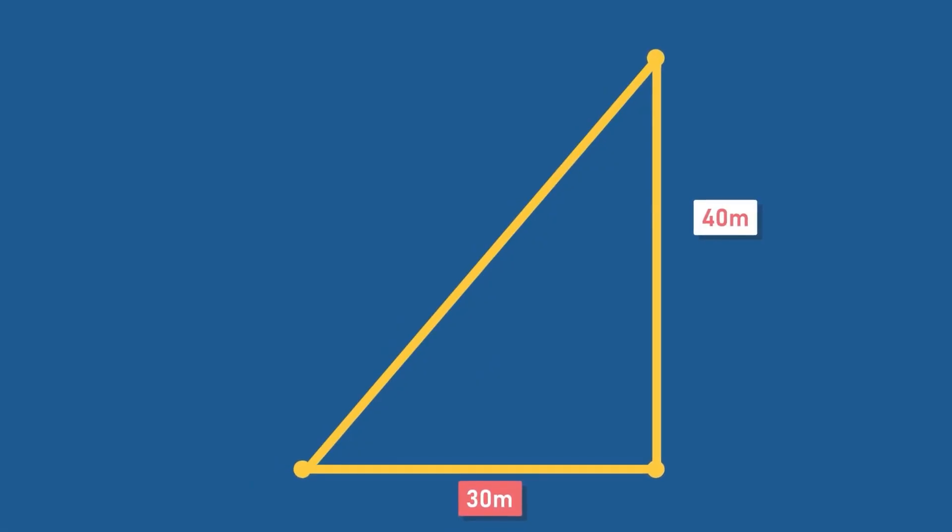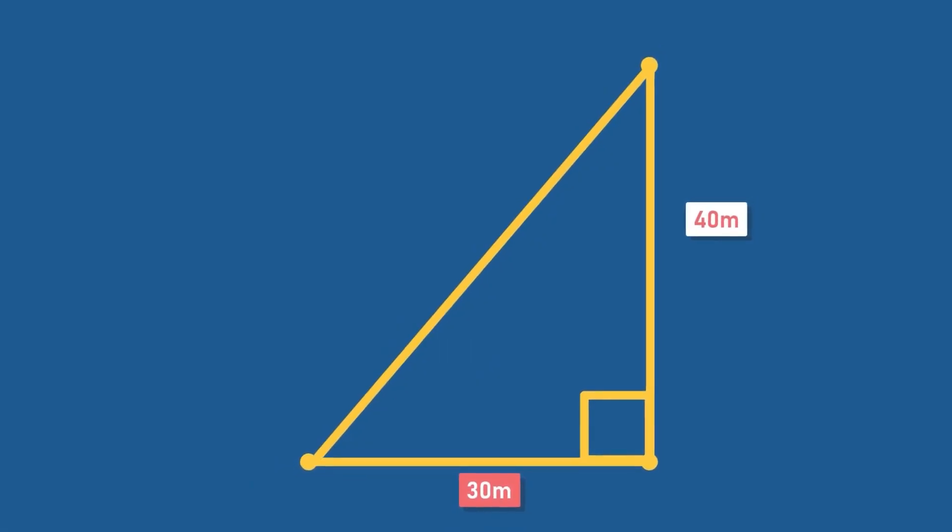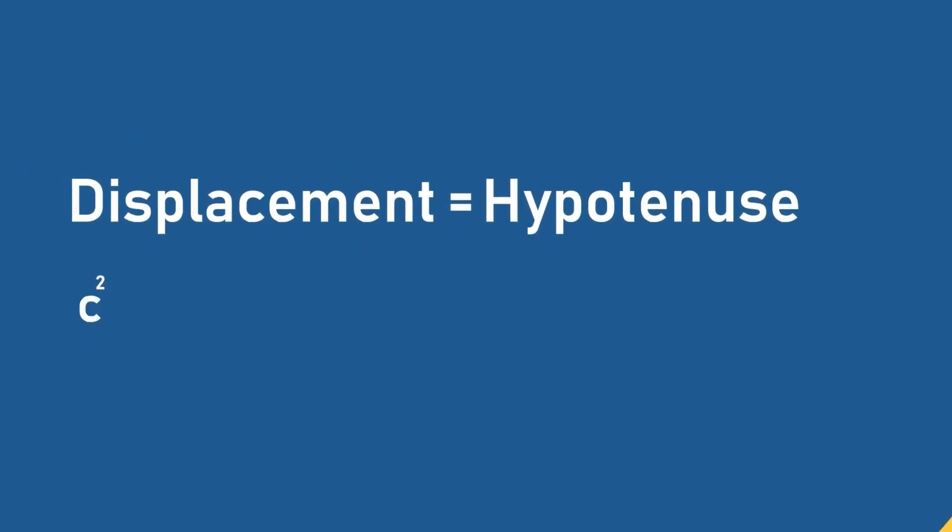If we look at this figure closely, we can see that this path forms a right triangle. Thus, we can calculate the displacement by solving the hypotenuse of the triangle using the formula c squared equals a squared plus b squared.